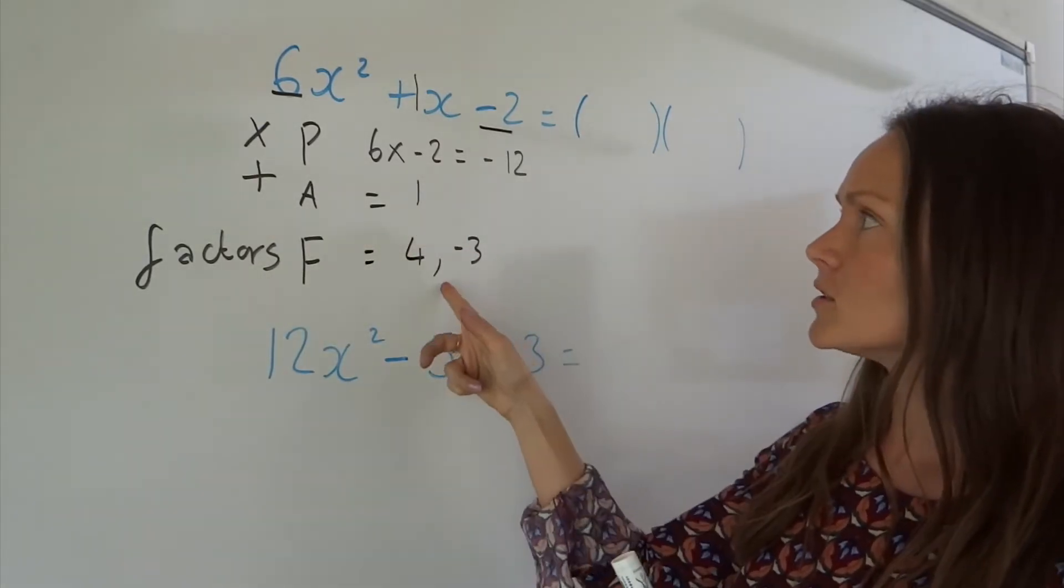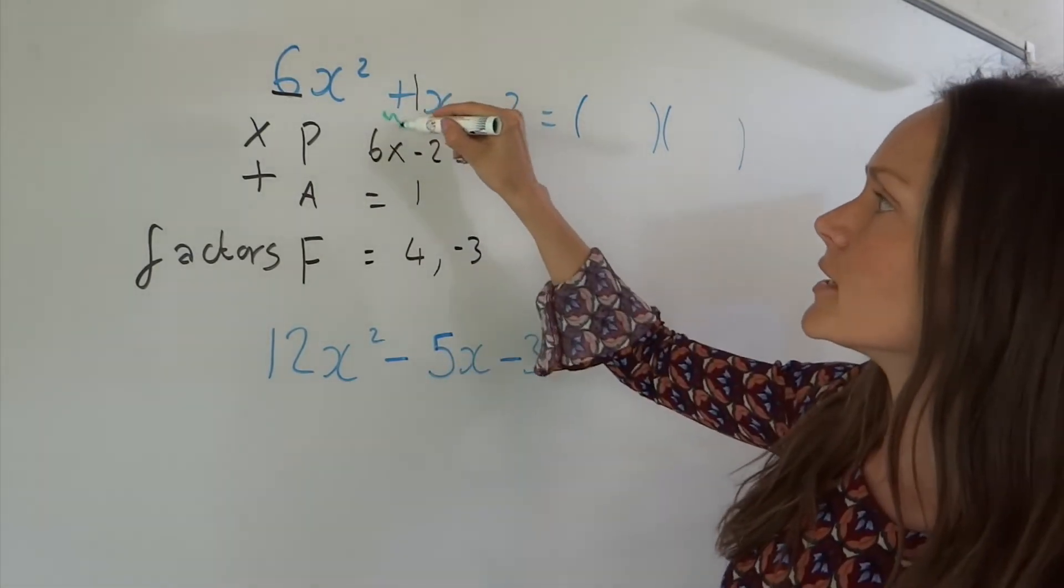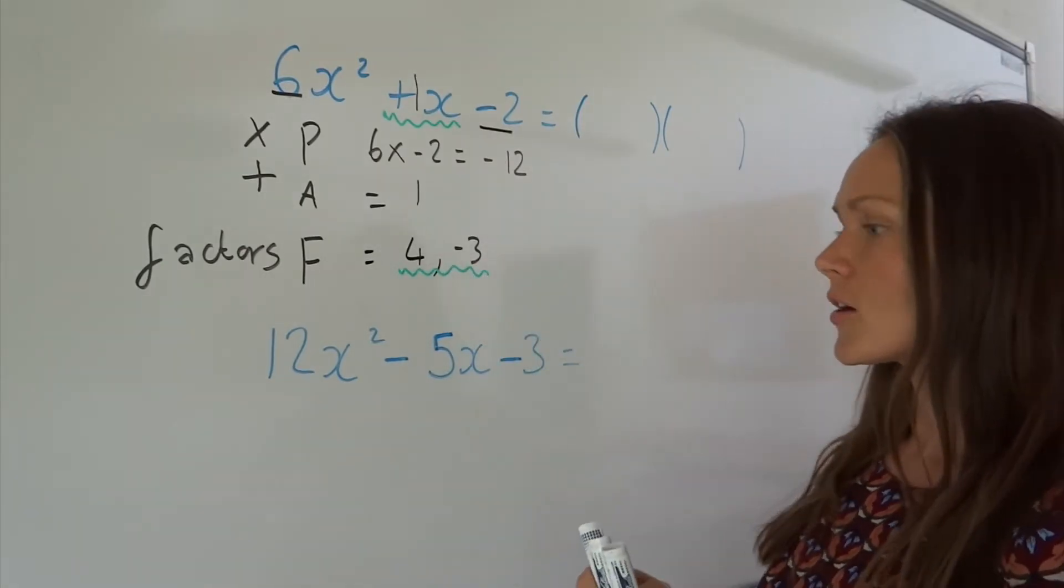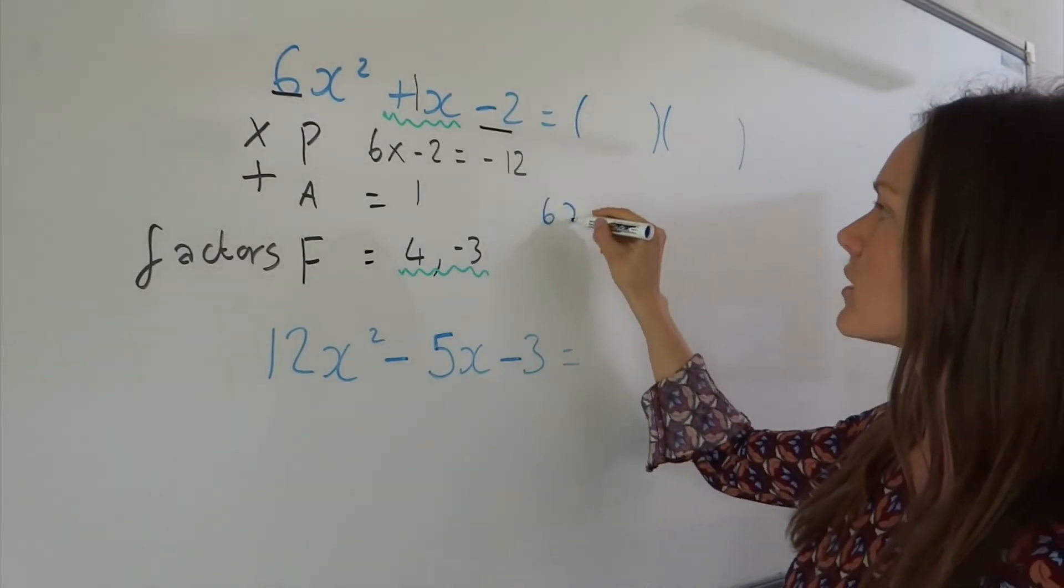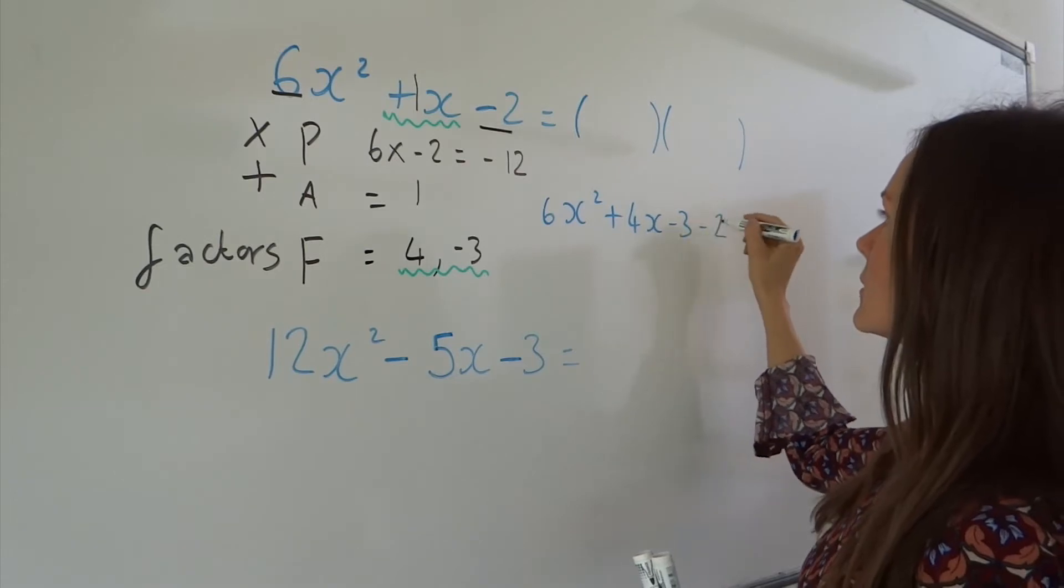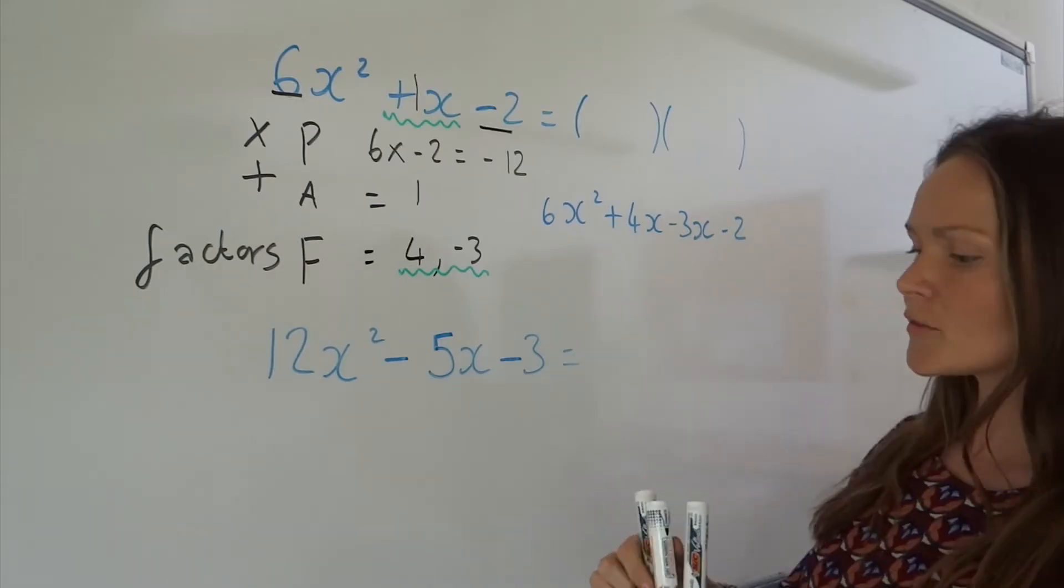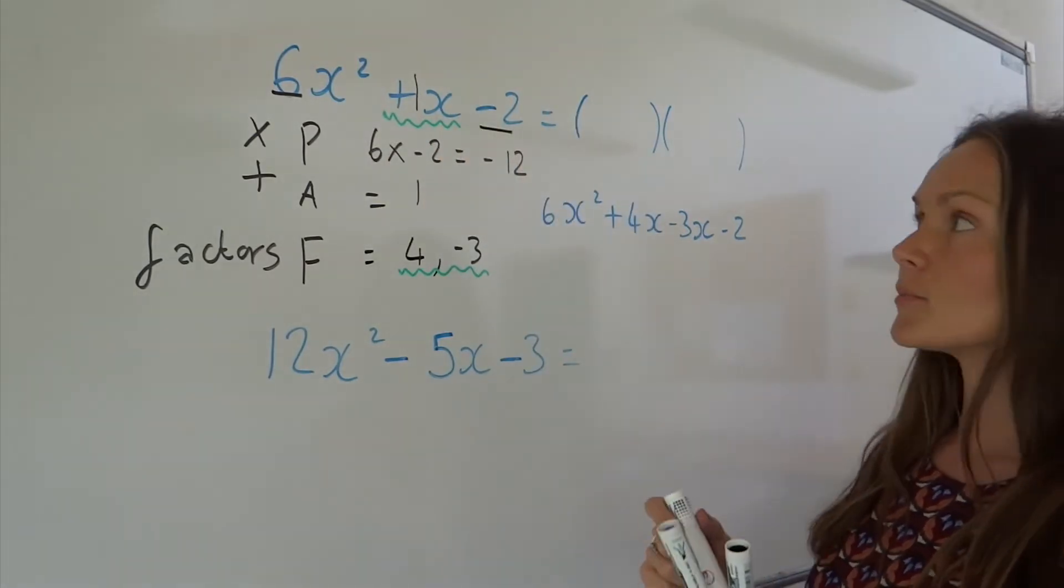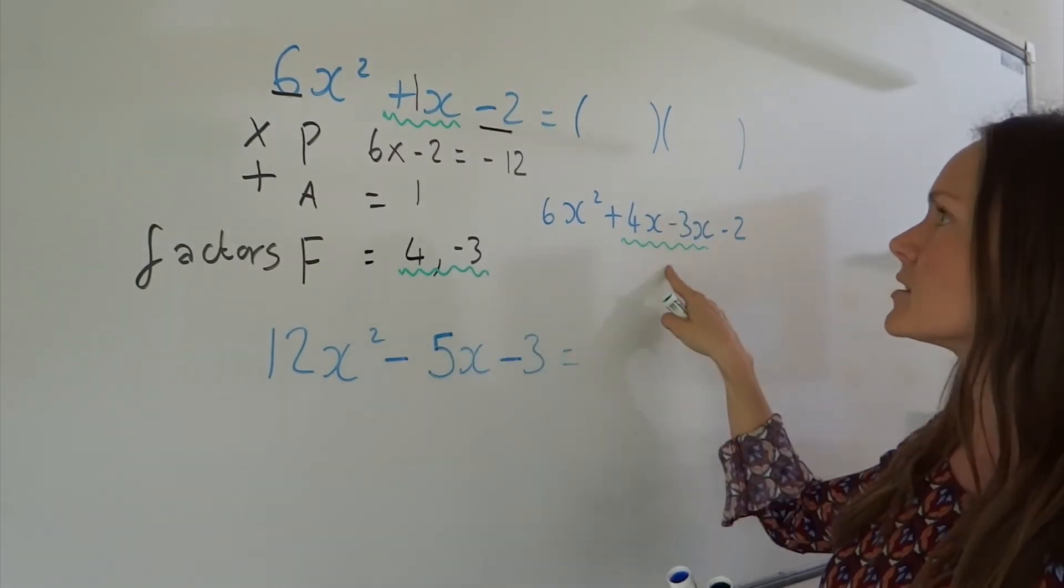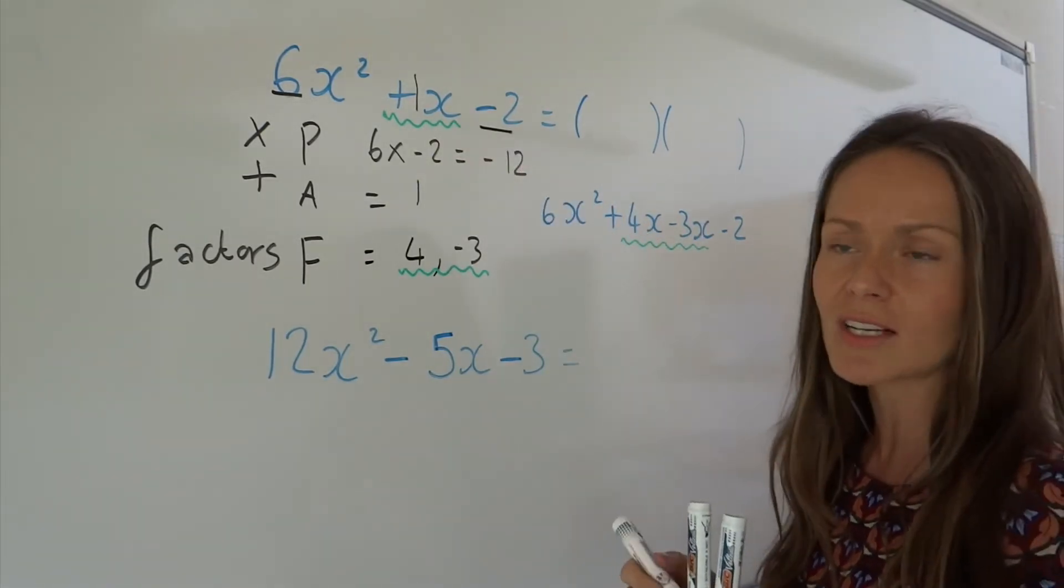Now that I've got my factors, I'm going to write out the quadratic again, but when I get to the x part, the x term, I'm going to rewrite it with my new factors. I'm not actually changing the quadratic, I'm just rewriting it in a different way. So all I've done is I've written out the same quadratic, except the x part I'm now rewriting in terms of my new factors. So it's actually the same thing, 4x minus 3x is still 1x, so it's still the same quadratic.